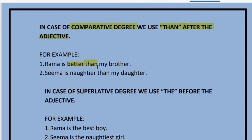For example, 'Rama is better' — 'better' is the comparative degree, and after it we must put 'than.' This makes it a comparative form. Similarly, 'Sima is naughtier than my daughter' — we are comparing Sima with my daughter, so we use the word 'than.'